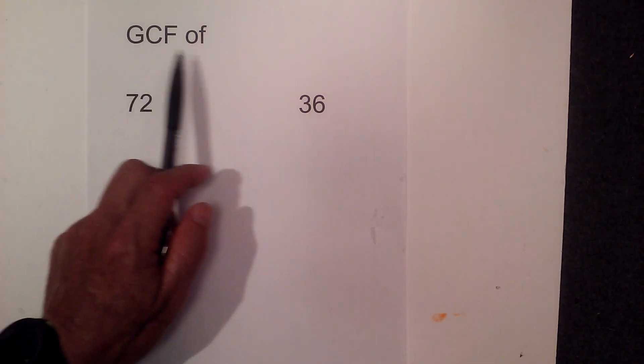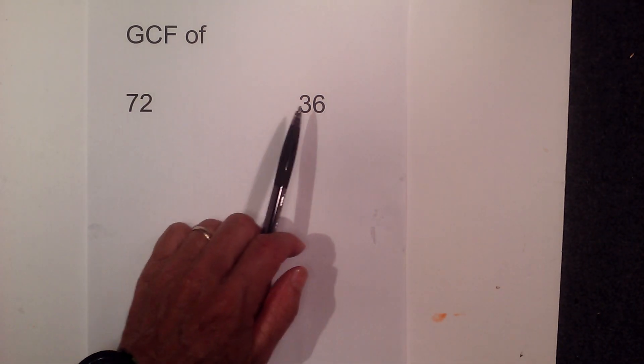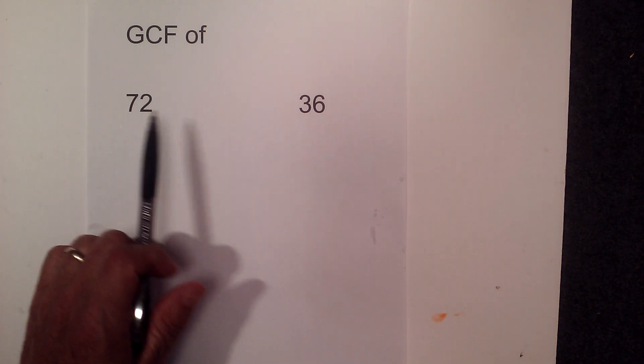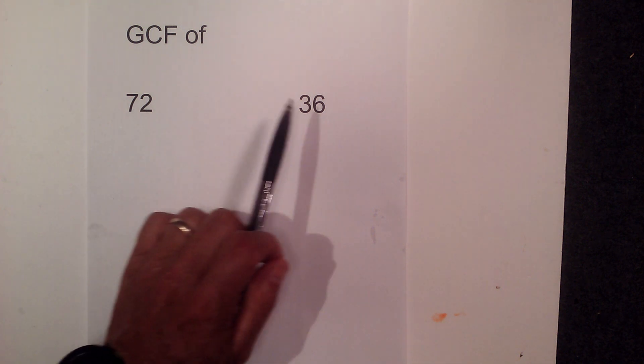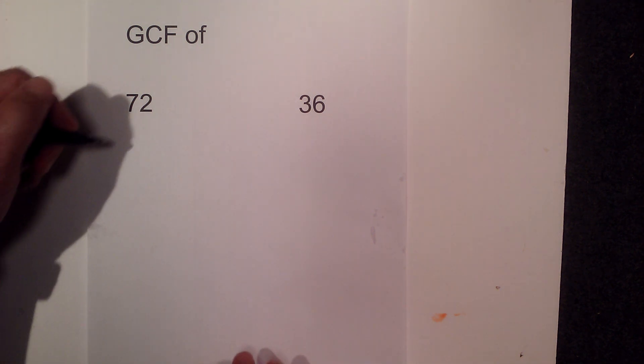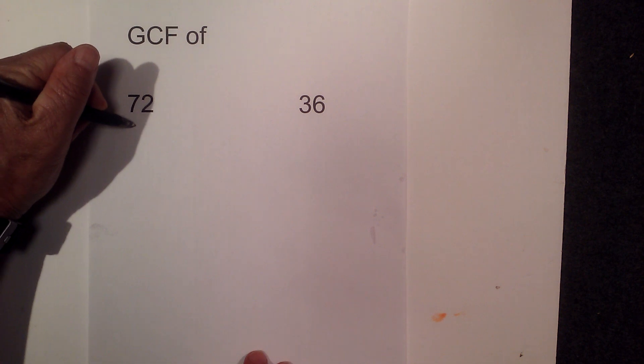In this video let's find the greatest common factor of 72 and 36. Remember the greatest common factor is the largest number that will divide evenly into 72 and 36. I like to use a factor tree which leads to prime factorization, so that's what I'm going to do.